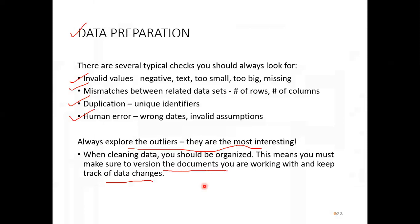There are several types of checks one should look for: invalid values — if you see some negative value when values need to be positive, when numeric data should be there but text information is present, or some values are too big or too small — we call them outliers — or missing values. Then there may be mismatches between data points in rows and columns, duplicated data, or human errors like wrong dates or wrong assumptions. I always try to explore outliers as they are most interesting, and while cleaning the data you must make sure you are versioning it properly and keeping track of changes you make to the original data.